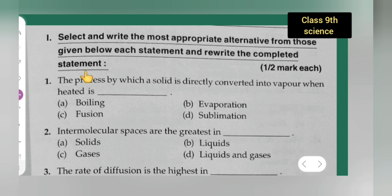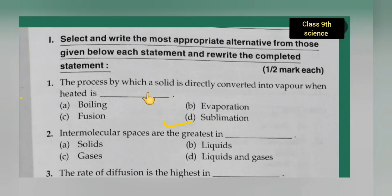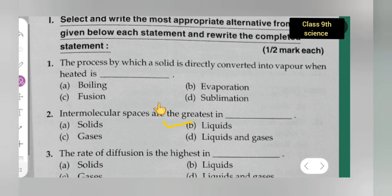Question 1: The process by which a solid is directly converted into vapor when heated. Option A is boiling, option B is evaporation, option C is fusion, option D is sublimation. The correct answer is sublimation — that is option D.